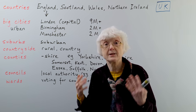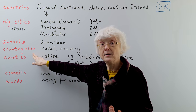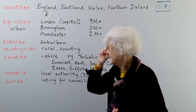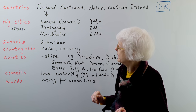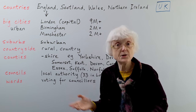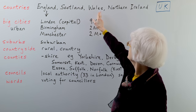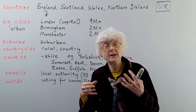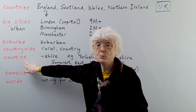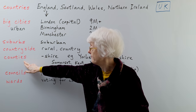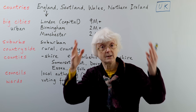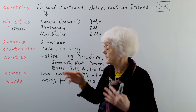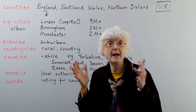Usually if you say 'the countryside,' that makes it much clearer what you're referring to. The whole of England — also Scotland, Wales, and Northern Ireland — have smaller areas called counties, which are quite big geographical areas with their own name.